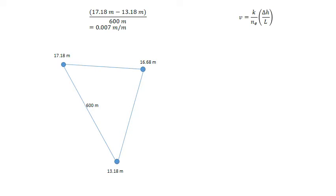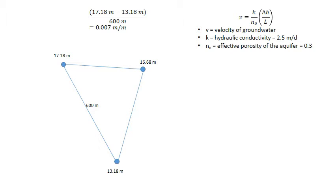To work out the velocity of the groundwater we use Darcy's equation. In Darcy's equation we have K over NE multiplied by delta H over L. V is the velocity of the groundwater. K is the hydraulic conductivity, which is given to us as 2.5 metres per day. NE is the effective porosity of the aquifer — in this instance it's given as 0.3. Delta H over L is the hydraulic gradient, which we calculated as 0.007 metres per metre.